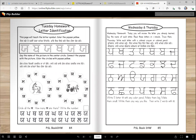Circle all the yayas. How many yayas are there? Write the number. So you will circle them first and then you'll count them - ik, do, tin, char, panj, chay, sat, at, no, das, yara, bara. So you write bara, one and two. Okay, Wednesday and Thursday - today you will review the letters you already learned.